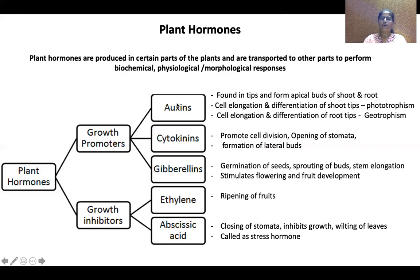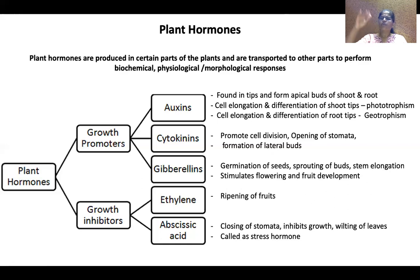Let us take the first hormone: auxin. It is usually found in the apical meristems — the shoot tips and root tips. It helps in cell elongation and differentiation at shoot tips, leading to shoot growth. Similarly in roots, cell elongation and differentiation at root tips leads to root growth. So auxin leads to both shoot growth and root growth.